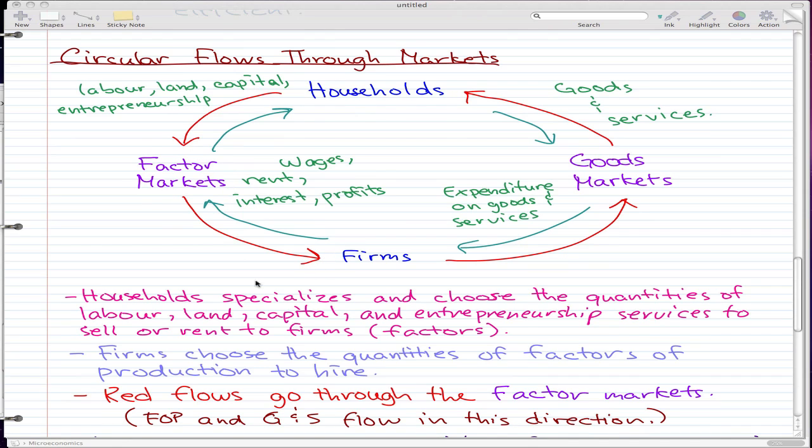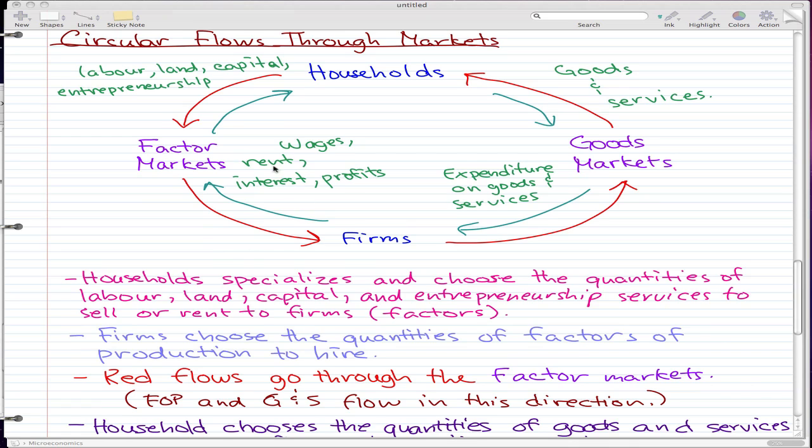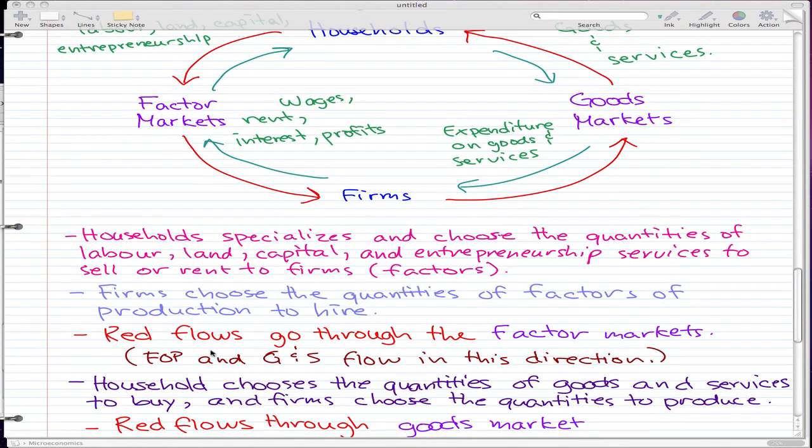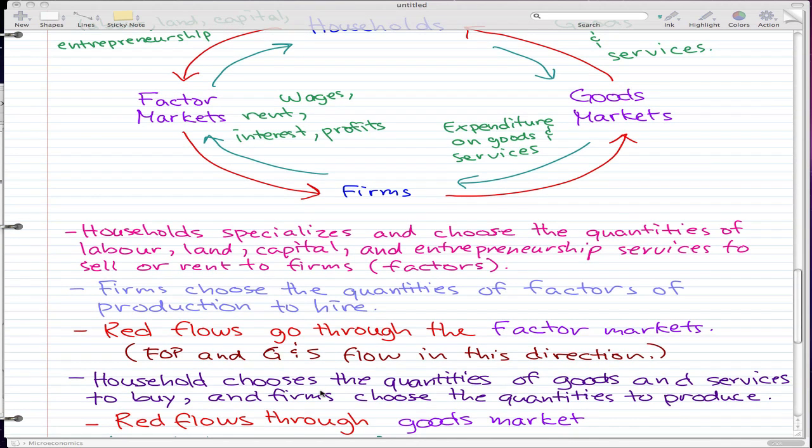And that's the kind of ideology that you would want to know in this left side of the model, this left side of the model with the red arrows. But that's all of that, so let's go on. Households will get to choose the quantities of goods and services to buy, and the firms choose the quantities to produce.